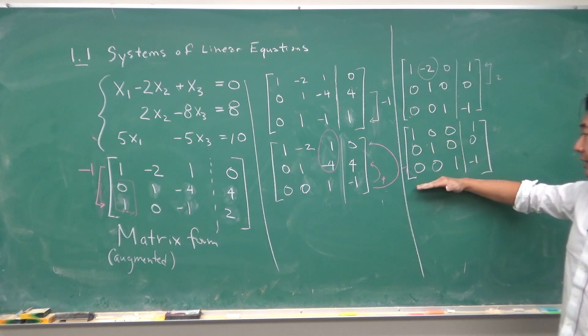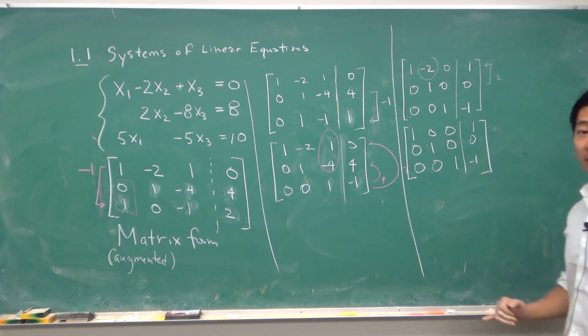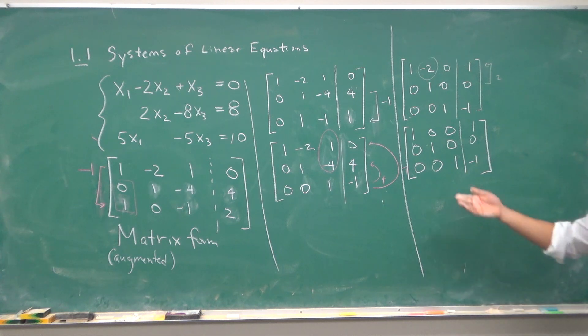Now when we have a matrix with ones on the diagonal and zeros everywhere else, then that is called the identity matrix. And this is called the reduced row echelon form.